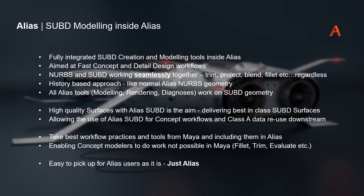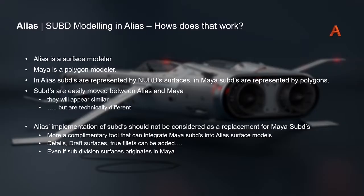Sub-D modelling in Alias: principally, Alias is a NURBS modeller using NURBS surfaces predominantly and creating Bézier curves within its mathematics. Maya is a polygon modeller — even though it's described as a subdivision surface modeller, it creates polygons as the resultant output. In Alias, sub-Ds are represented by NURBS surfaces, so the limit surface created in Alias is a NURBS surface, whereas in Maya, sub-Ds are represented by polygons. They are very different in their mathematics.